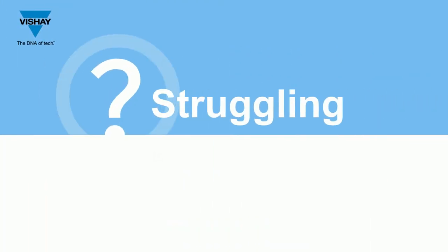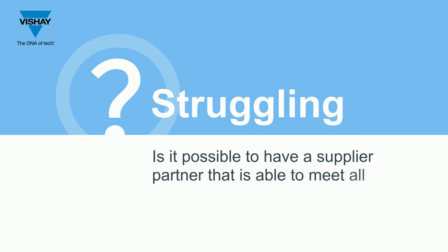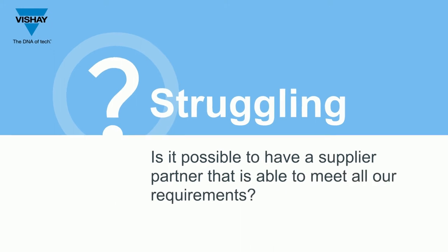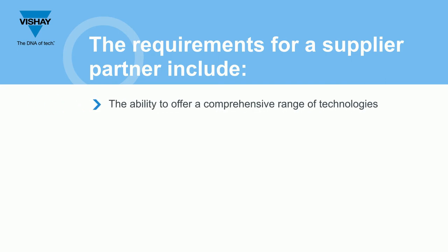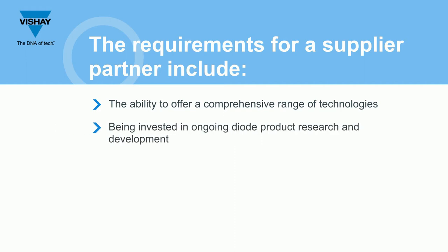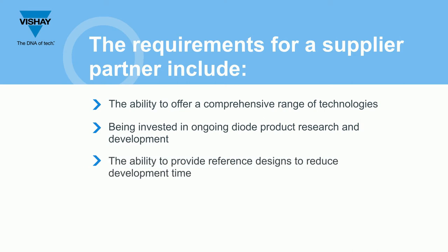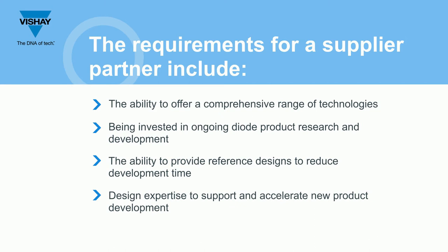Is it possible to have a supplier partner that is able to meet all our requirements? The requirements for a supplier partner include the ability to offer a comprehensive range of technologies, being invested in ongoing diode product research and development, the ability to provide reference designs to reduce development time, and design expertise to support and accelerate new product development.